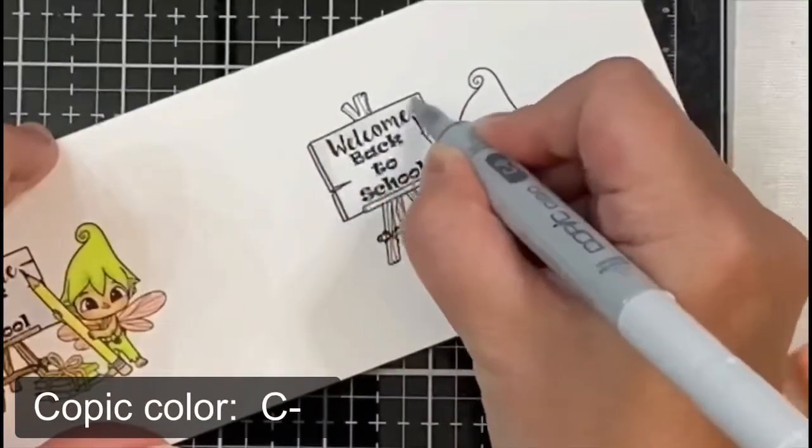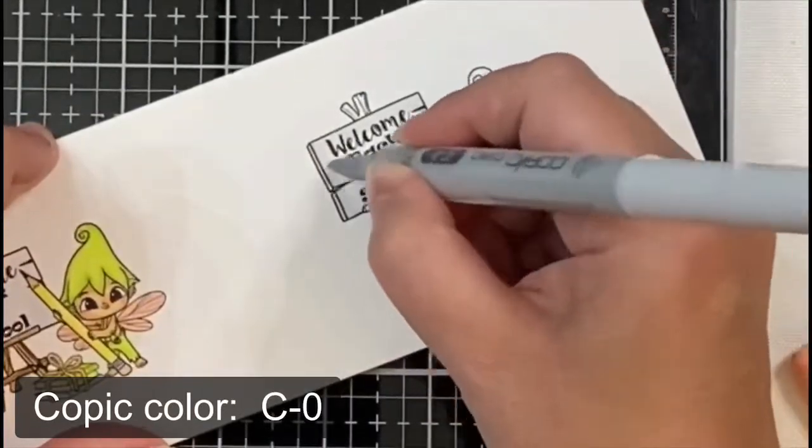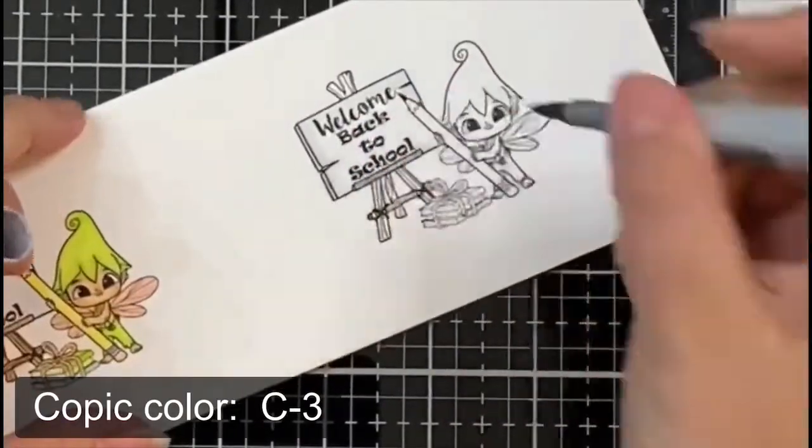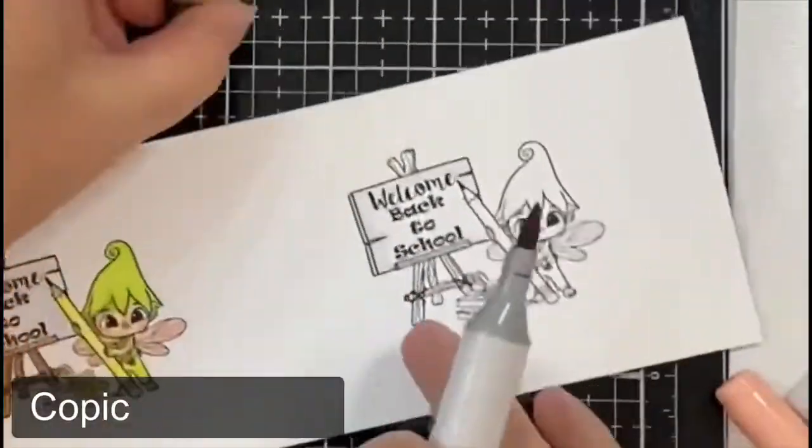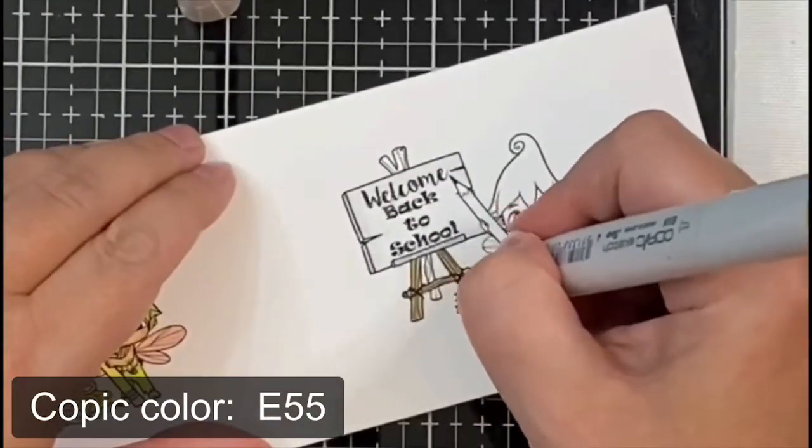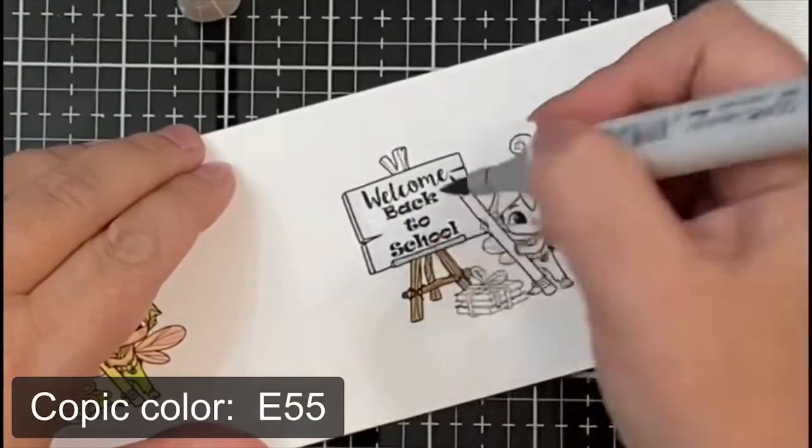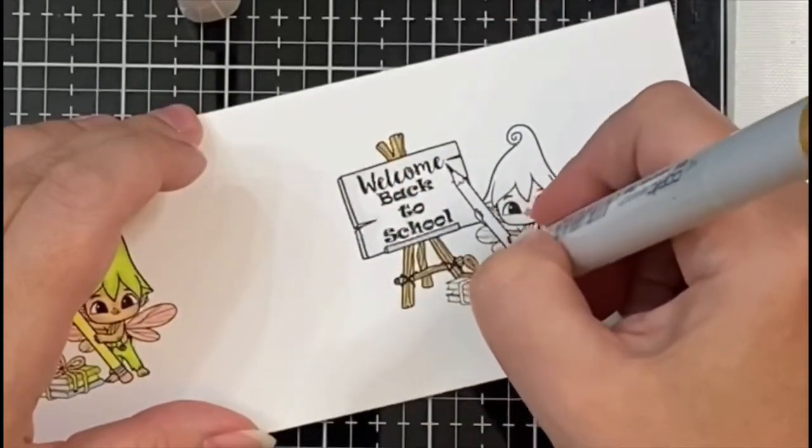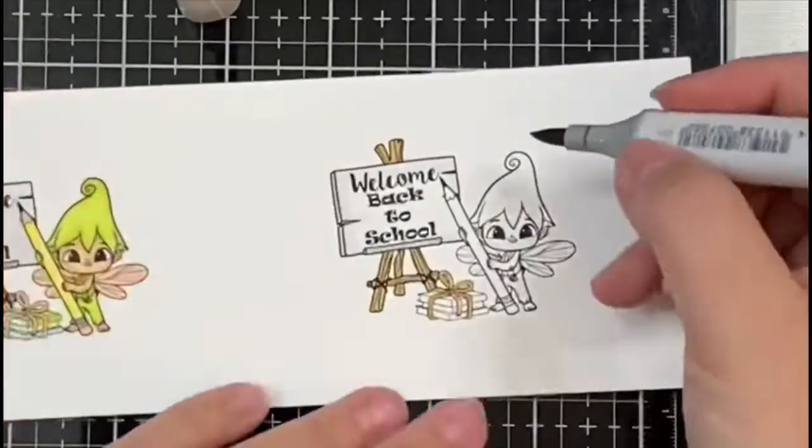Now for the image on this card I decided to use the sign this time with the sentiments 'Welcome' and 'Back to School.' I colored the sign with C0 and C3 which is a gray color, and then E55 for the wood part. Now I'm not going to talk the rest of the time that I'm coloring, I'm going to put on some music, but the colors that I've used are listed here on the screen.